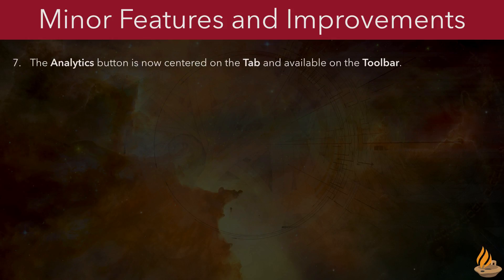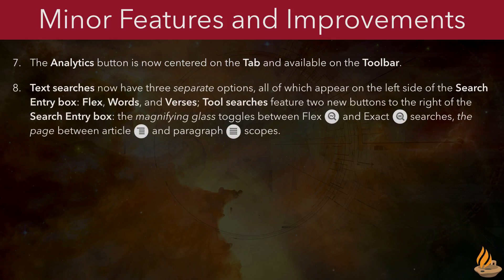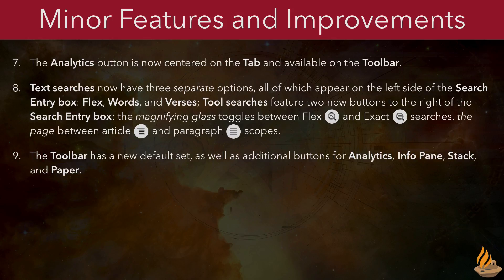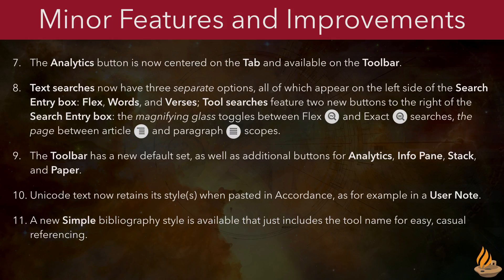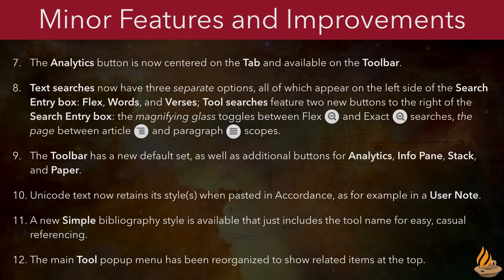Seven, the Analytics button is now centered on the tab and available on the toolbar. Eight, text searches now have three separate options — flex, words, and verses — all appearing on the left side of the search entry box, while tool searches feature two new buttons to the right: the magnifying glass toggles between flex and exact searches, and the page toggles between article and paragraph scopes. Nine, the toolbar has a new default set, as well as additional buttons for analytics, info pane, stack, and paper. Ten, Unicode text now retains its styles when pasted in Accordance, as for example in a user note. Eleven, a new simple bibliographic style is available that just includes the tool name for easy, casual referencing. And twelve, the main tool pop-up menu has been reorganized to show related items at the top.